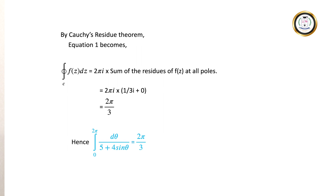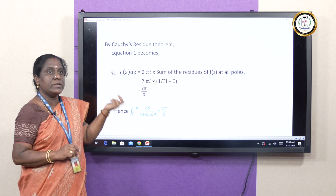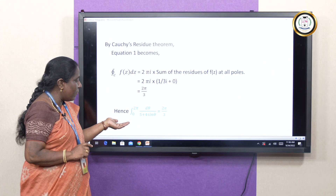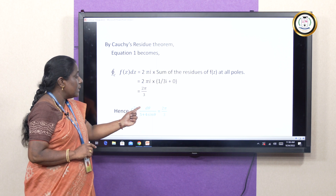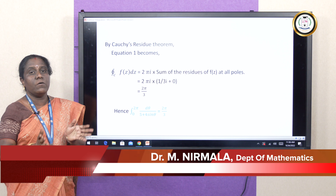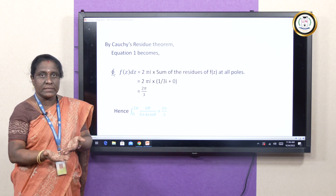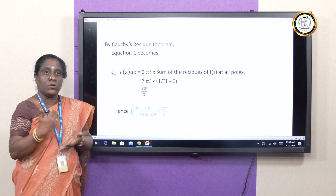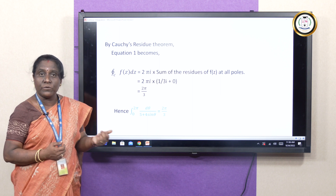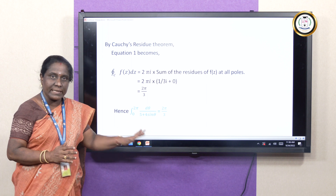Now we apply the Cauchy Residue Theorem. The integral ∮_C f(z) dz = 2πi × (sum of residues) = 2πi × (1/(3i) + 0) = 2π/3. Therefore, the solution to the real definite integral ∫₀^{2π} dθ / (5 + 4 sin θ) is 2π/3. This demonstrates how a real integral is transformed into a complex integral, and solved using singularity, pole, residue, and the Cauchy Residue Theorem. With that, I will complete this lecture. Thank you all.